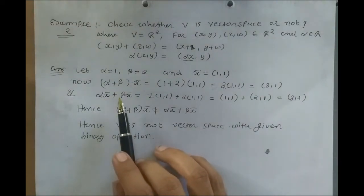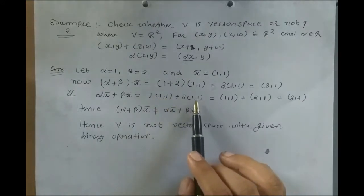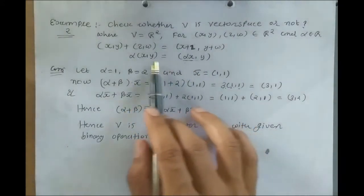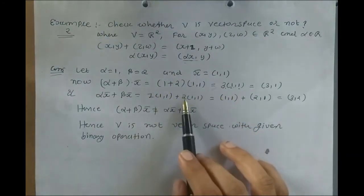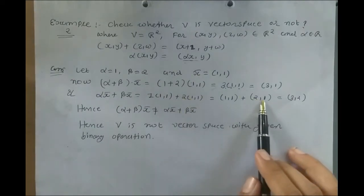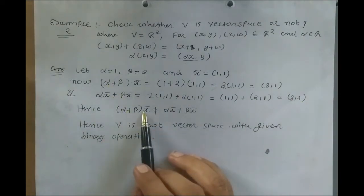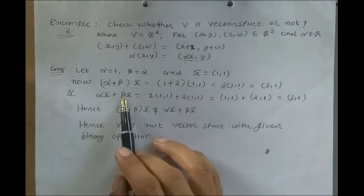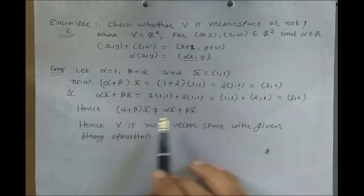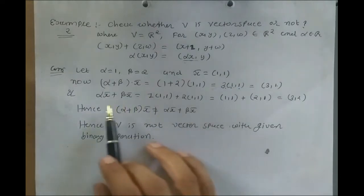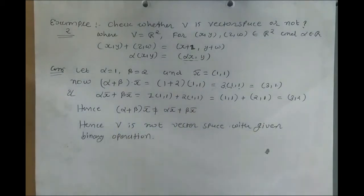Now compute alpha·X̅ + beta·X̅: 1·(1,1) gives (1, 1) and 2·(1,1) gives (2, 1), since the scalar multiplies only the first coordinate. Adding these: (1+2, 1+1) = (3, 2). So (alpha+beta)·X̅ = (3,1) but alpha·X̅ + beta·X̅ = (3,2). Both are not the same, so the distributivity over scalar addition is not satisfied. Hence V is not a vector space with the given binary operation.